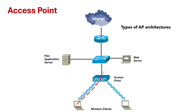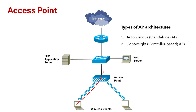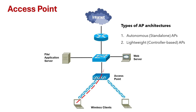There are actually two main types of AP architectures: autonomous standalone APs, and lightweight controller-based APs. You can choose the type based on your network size, management complexity, and scalability requirements.